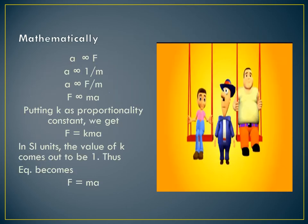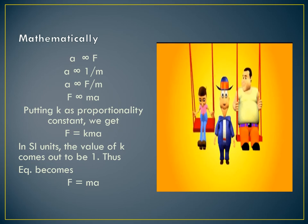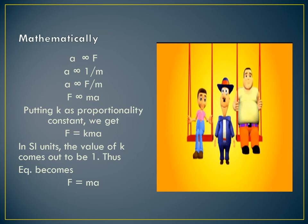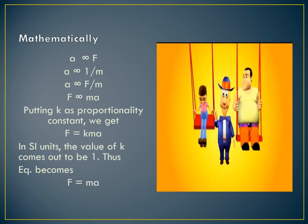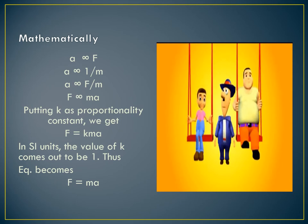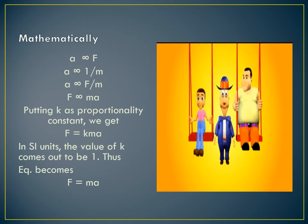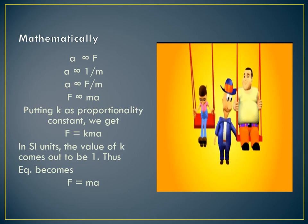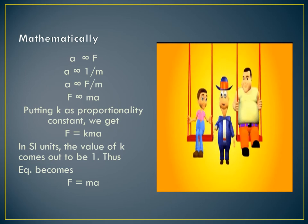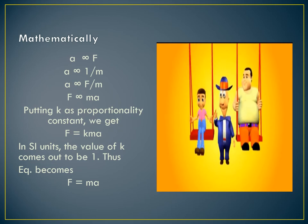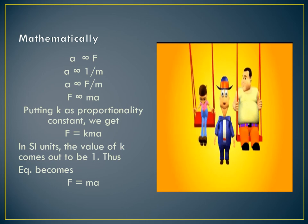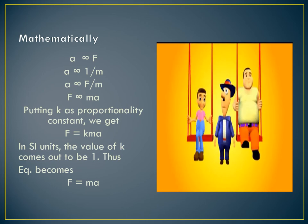As shown in the animation, a person applies the same force on two kids sitting on swings of different masses. The force applied on the swing with the kid having smaller mass produces more acceleration and the swing moves with greater speed. When the same force is applied on the swing with the kid having greater mass, the acceleration produced is very low and the swing moves only a little.